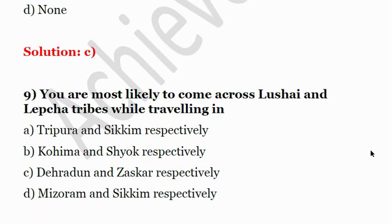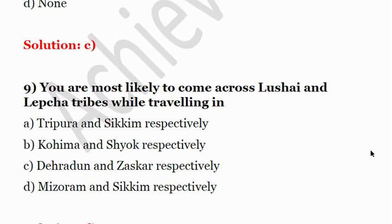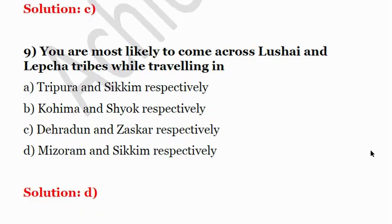Ninth question: You are most likely to come across Lushai and Lepcha tribes while traveling in — A: Tripura and Sikkim respectively; B: Kohima and Shyok respectively; C: Dehradun and Zanskar respectively; D: Mizoram and Sikkim respectively. The correct answer is D — Mizoram and Sikkim respectively.